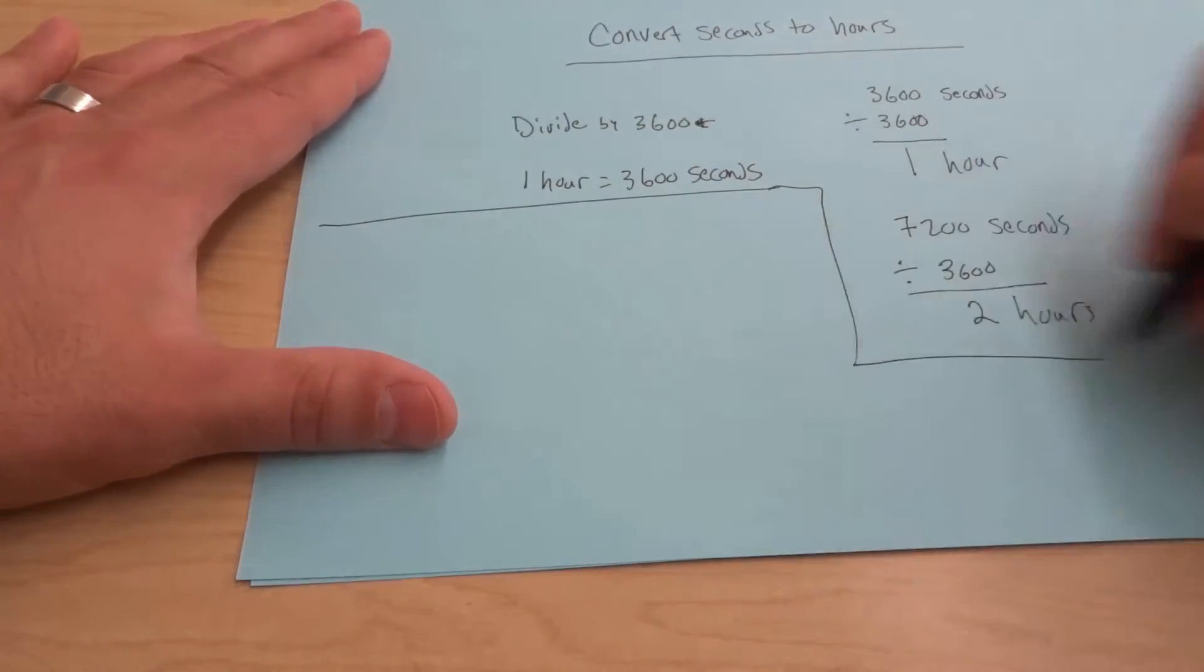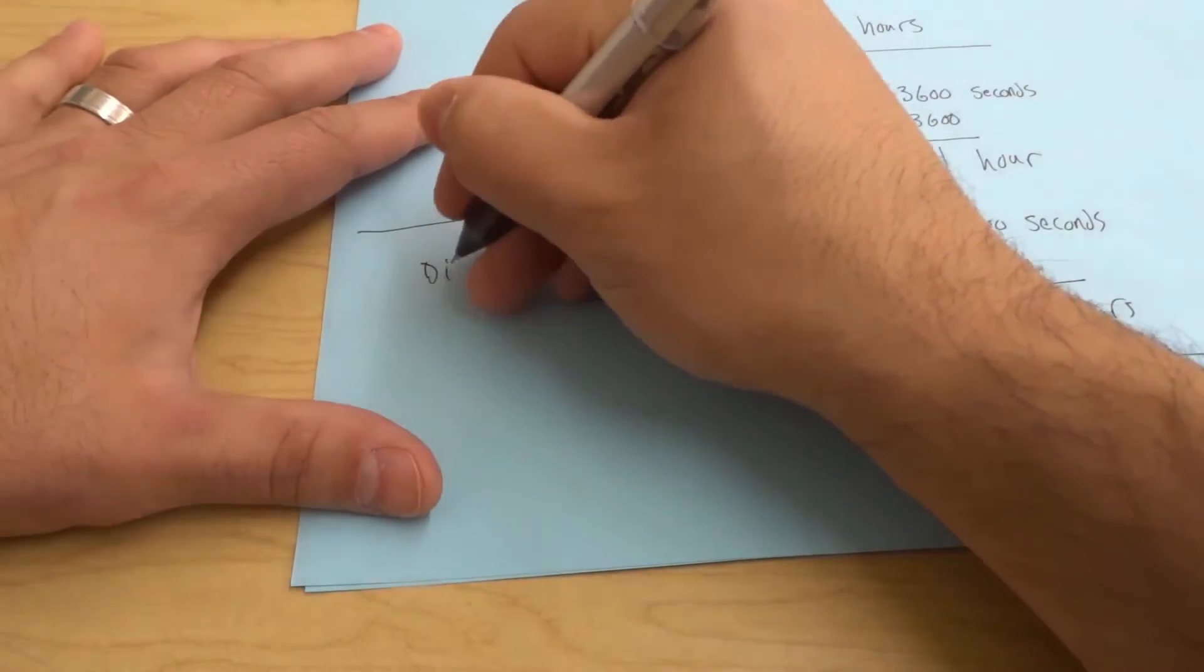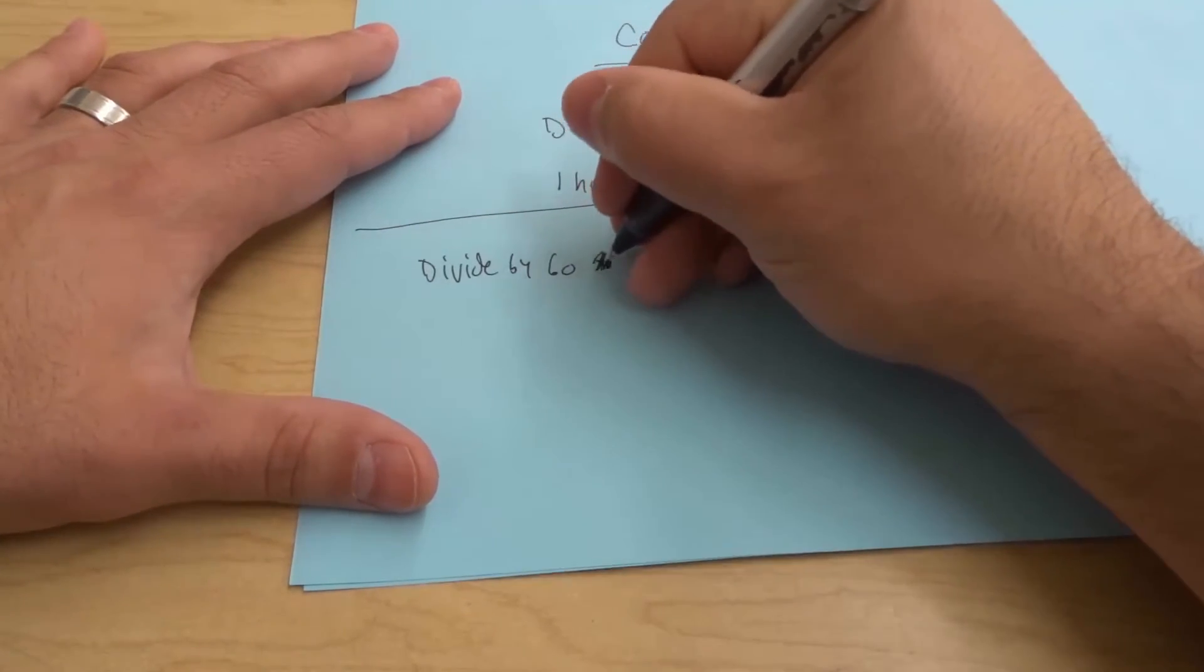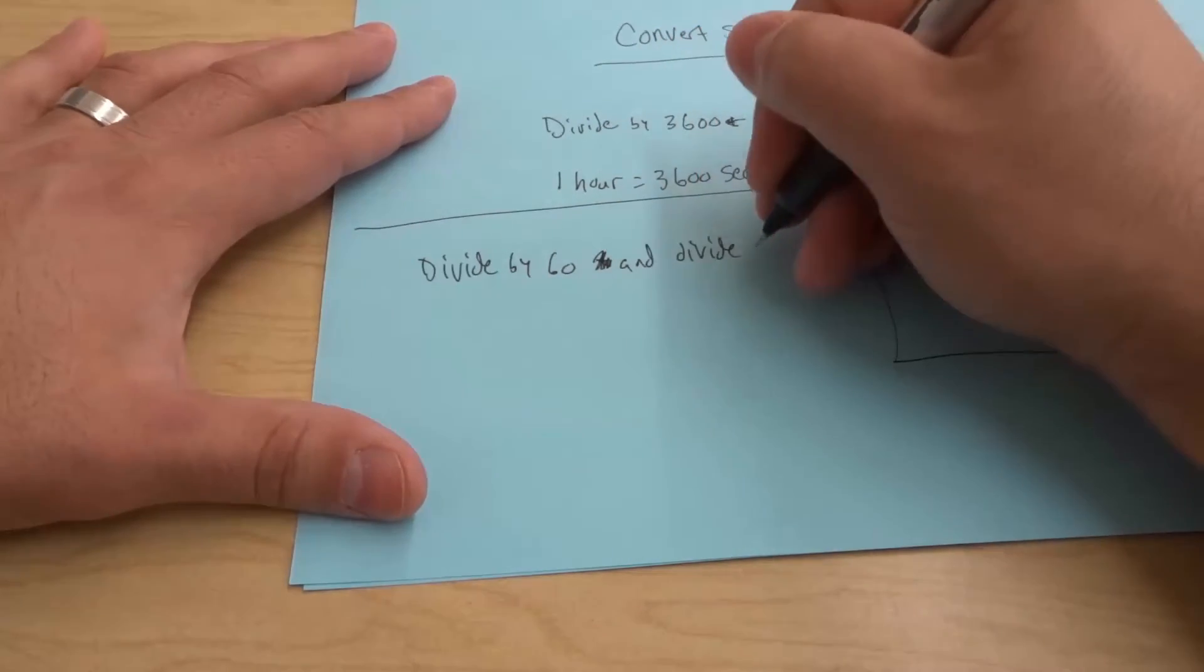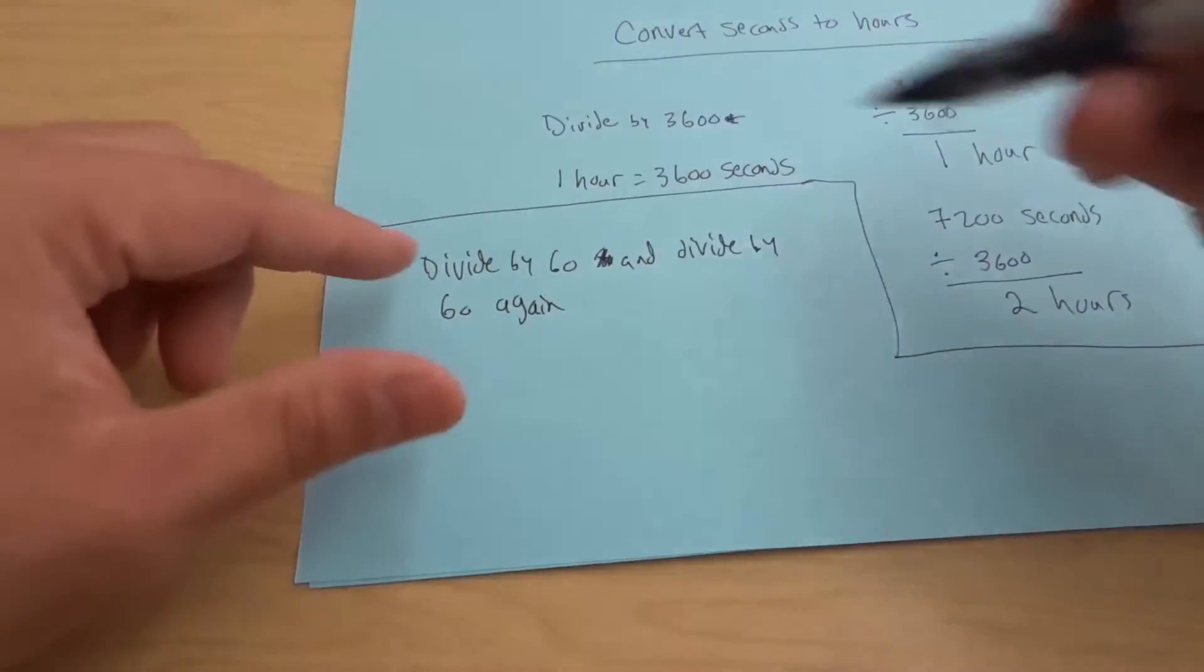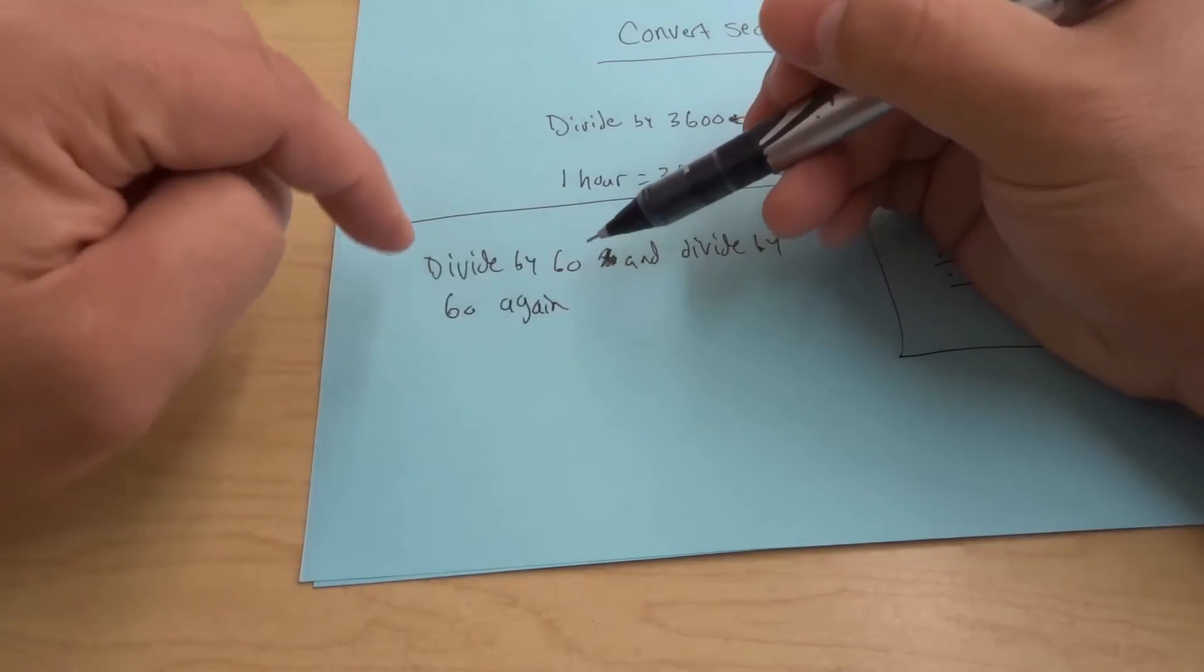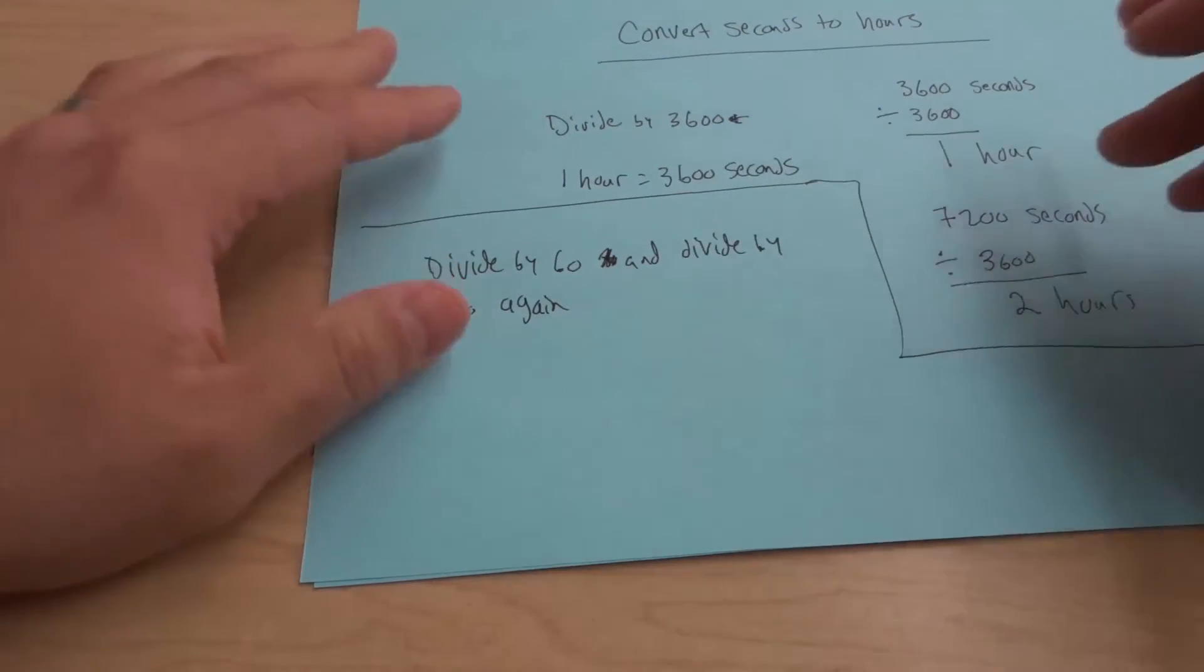But another way is to actually divide the number by 60 and then divide by 60 again. So when you divide the number of seconds by 60, it's going to give you the number of minutes, and then when you divide that by 60, so when you divide that answer by 60, it's going to give you the number of hours.